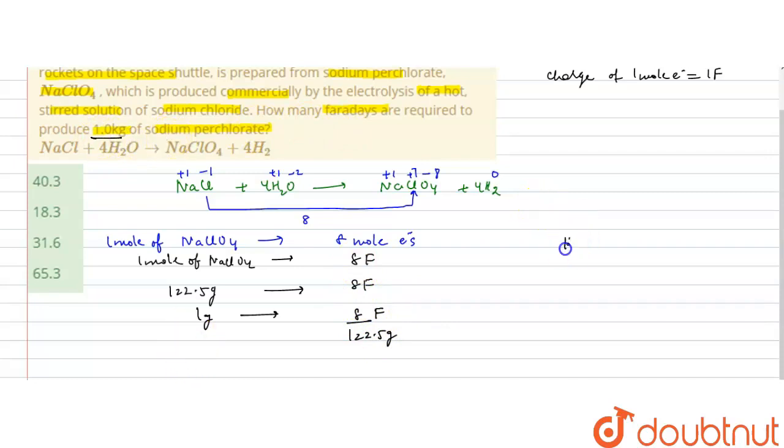So for one kilogram, there are thousand grams, so it would be: thousand grams will require 8 divided by 122.5 times 1000 grams, which is equal to...